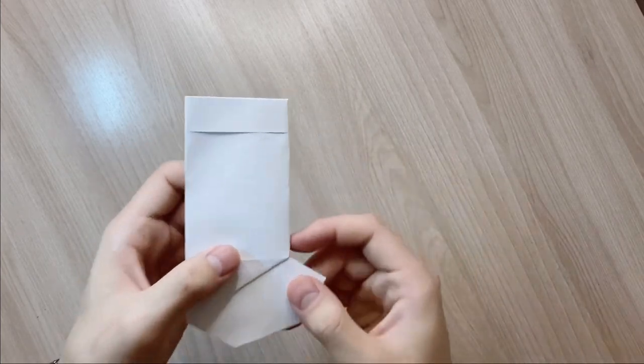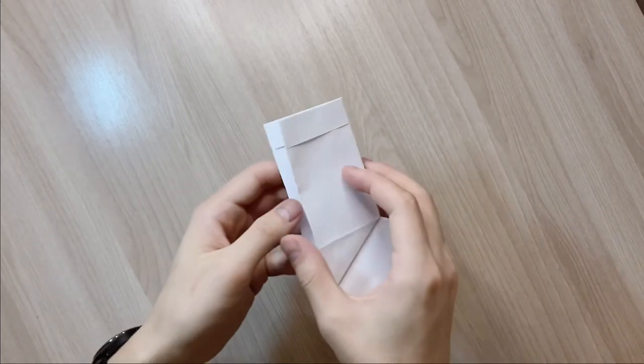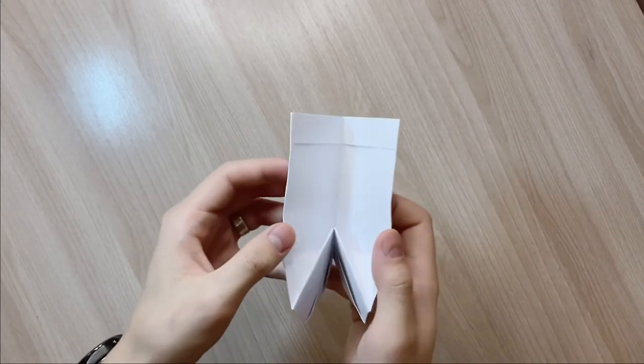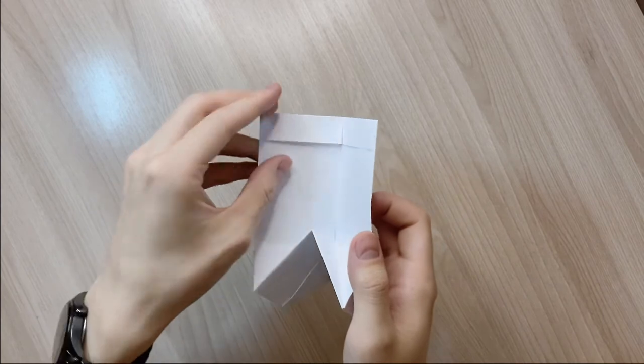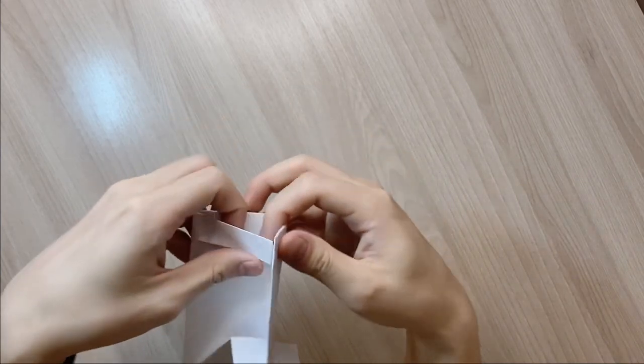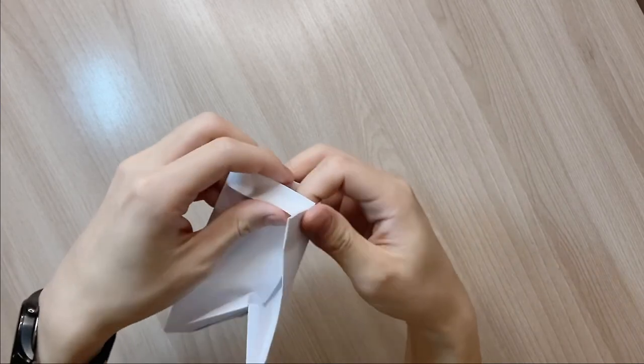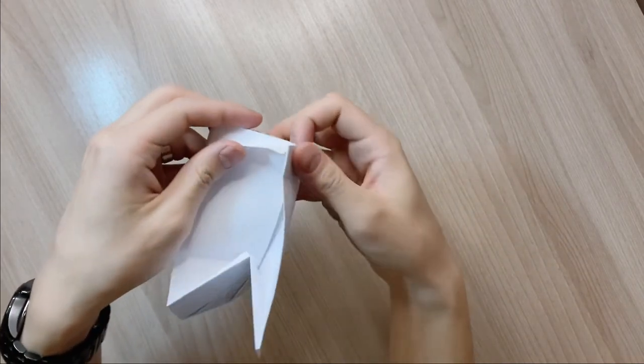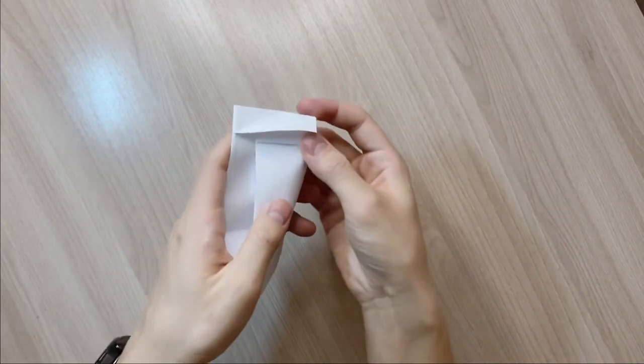So, for the last step, you're gonna open up the back of the stocking. And you're gonna lift the paper flap on the left side. And you're gonna take the right side and slide it underneath that strip of paper. Just like that.